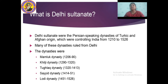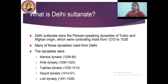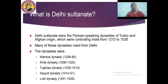These dynasties were of Turkic and Afghan origin. The Mamluk dynasty ruled from 1206 to 1290, followed by the Khilji dynasty from 1290 to 1320, the Tughlaq dynasty from 1320 to 1413, the Sayyad dynasty from 1414 to 1451, and lastly the Lodi dynasty from 1451 to 1526.